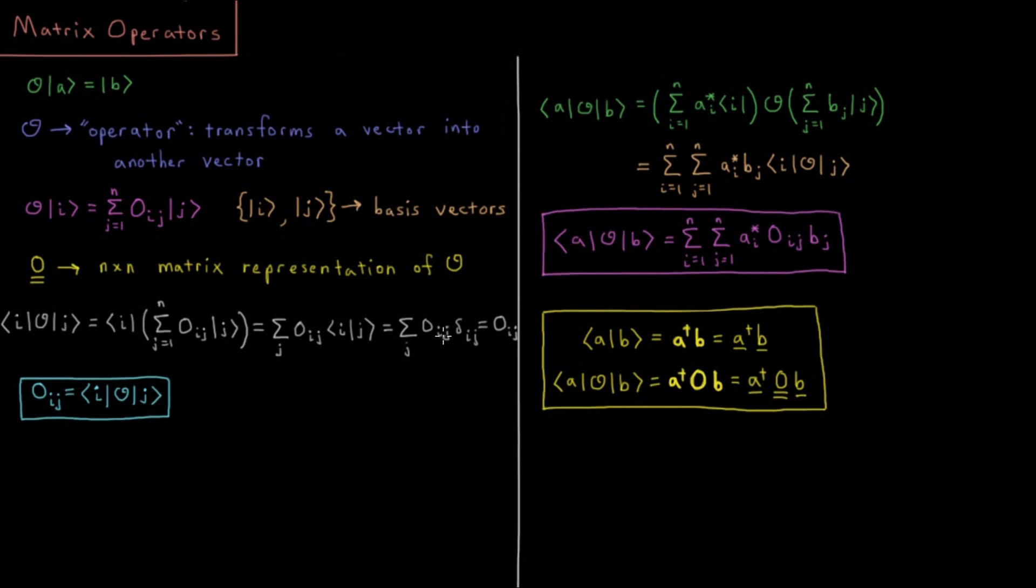In each case Oij stays the same, but the only case in which you get a non-zero value, there's one element in the sum where you get a 1, all the rest are 0. So the result of this sum is Oij. It's the matrix element of O for our representation in this basis set. We get this element by computing this bra ket notation with an operator in the middle.